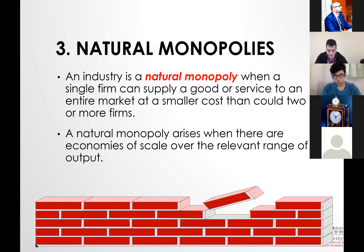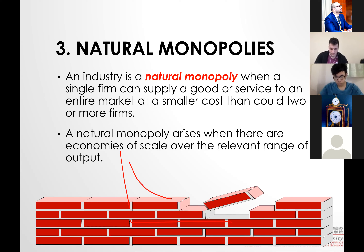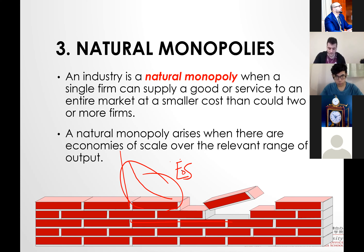Number three: natural monopoly. Many students confuse natural monopoly with ownership of key resources — they are different things. Natural monopoly relates to the average total cost curve. We talked about how ATC is U-shaped. But what if a company remains at its large scale — economies of scale — so that its average total cost looks L-shaped?